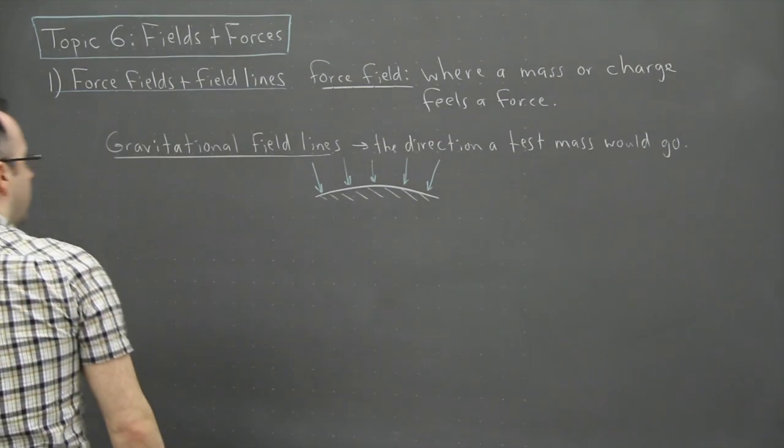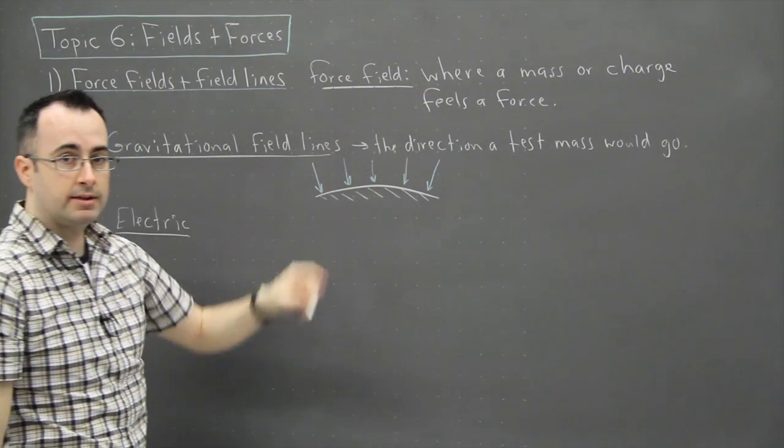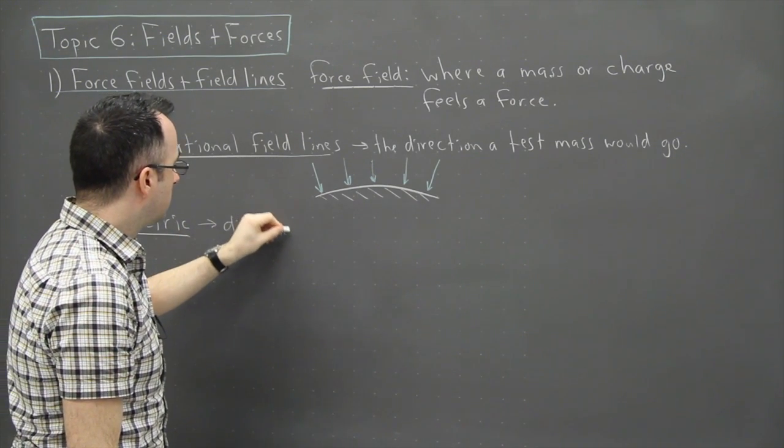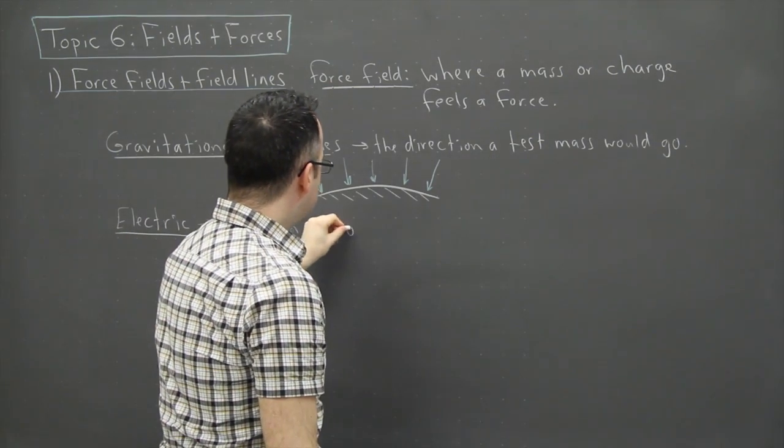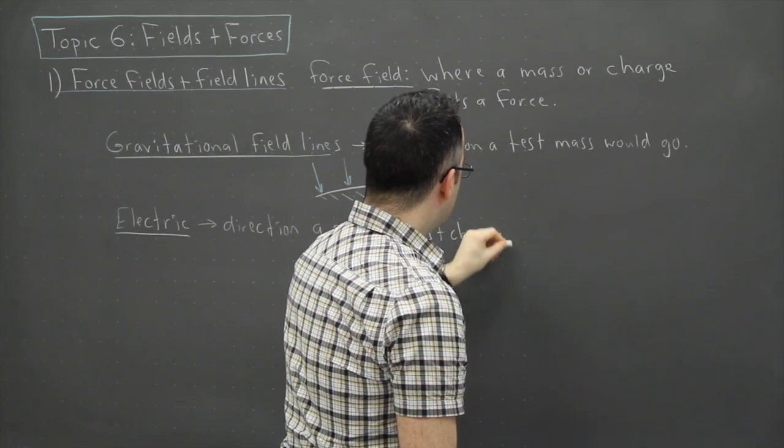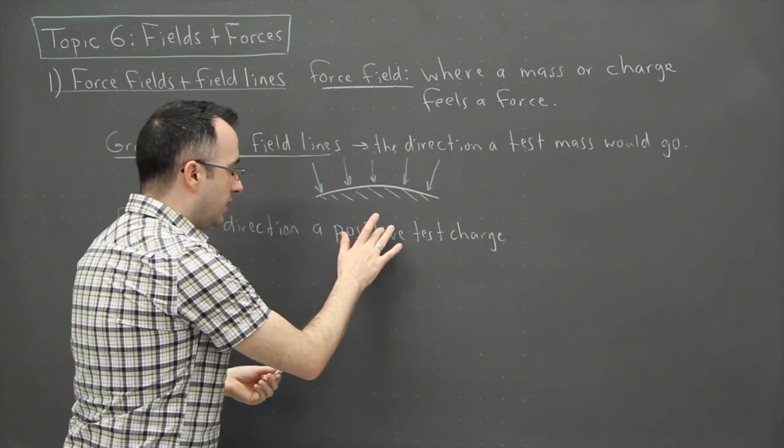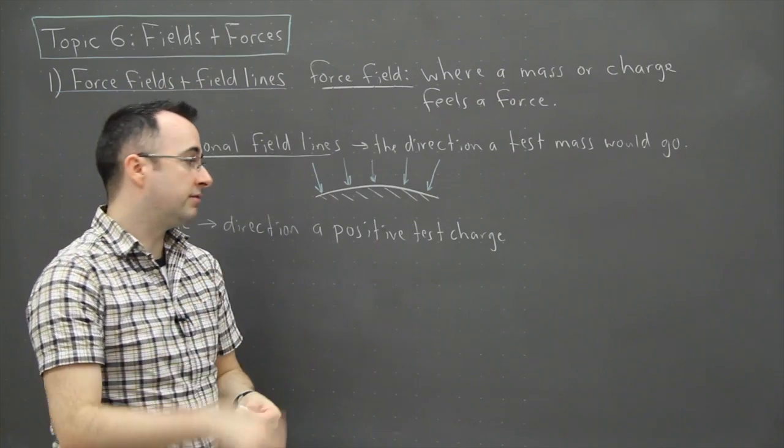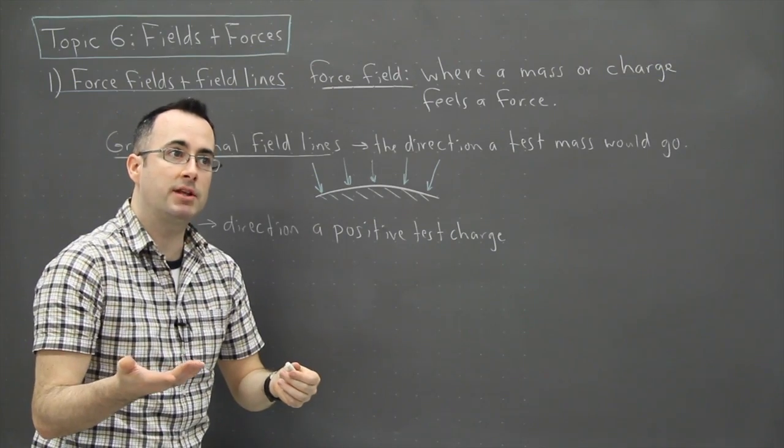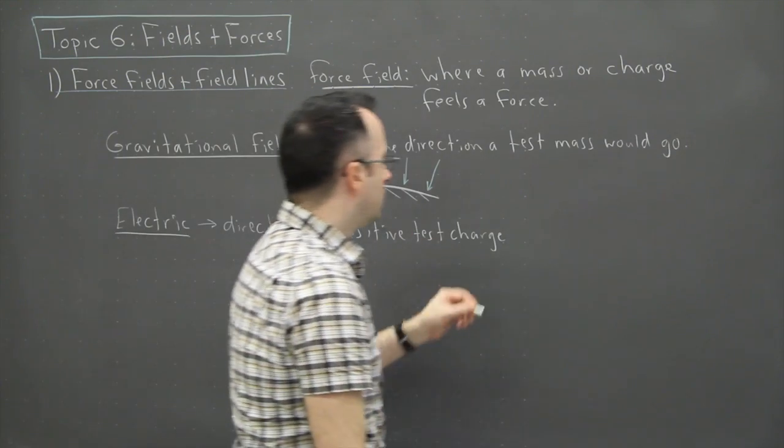So for example, with electric field lines. I'm just going to say electric, but electric field lines. Same sort of thing except this time it's the direction that a positive test charge would go. That's the key thing here. So we could have chosen because in electricity, or at least with what we call static electricity, which is things not moving, we have something called charge. And charge can be positive or negative. So we had to choose some sort of arbitrary. Are we going to choose the direction that a positive would go or a negative? So it was decided that it would be the direction that a positive test charge would go.